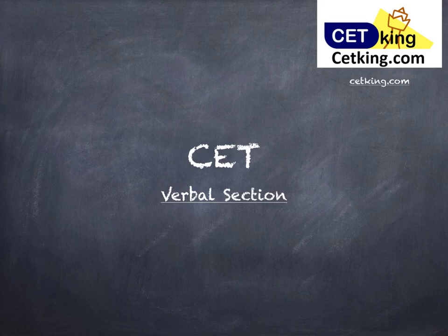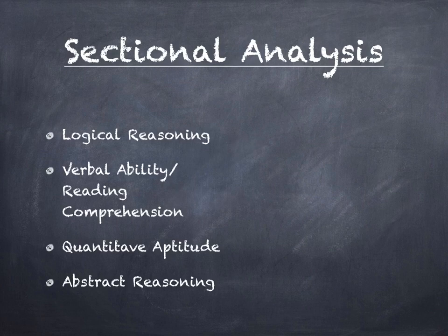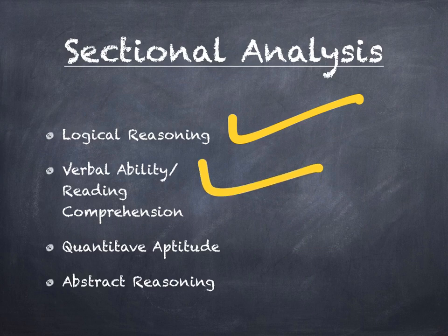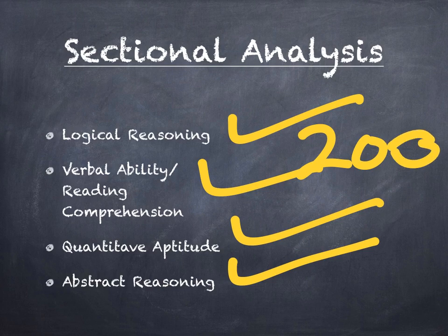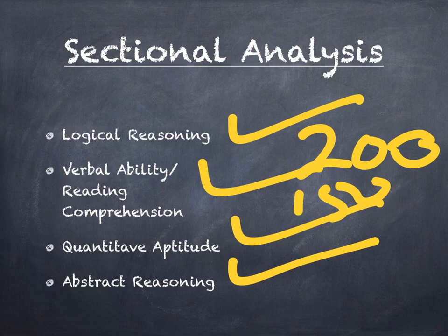Let's understand the verbal section in the CET examination. In the sectional analysis, you're going to get logical reasoning, verbal ability/reading comprehension, quantitative aptitude, and abstract reasoning — four topics with 200 questions total and a time limit of 150 minutes. CET is not about accuracy; it's about time management. In 150 minutes, the more questions you get right, the better your chances of achieving maximum percentile.